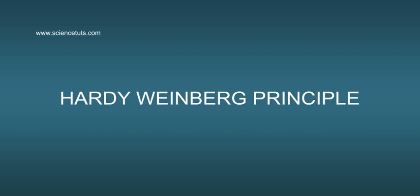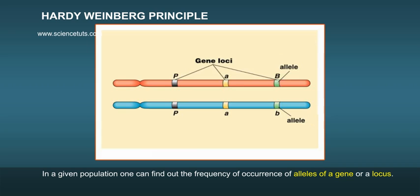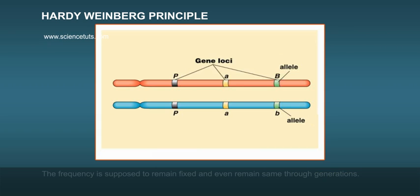Hardy-Weinberg Principle: In a given population, one can find out the frequency of occurrence of alleles of a gene or a locus. The frequency is supposed to remain fixed and even remain same through generations.